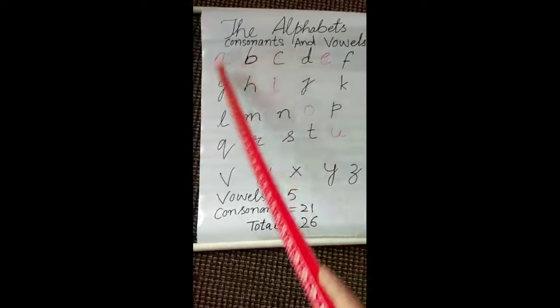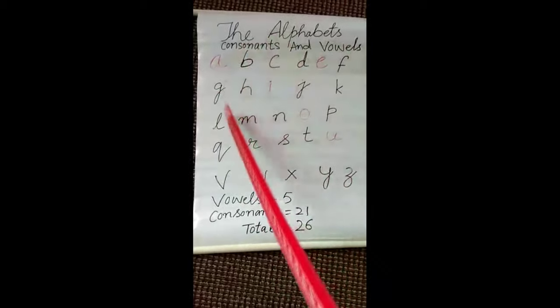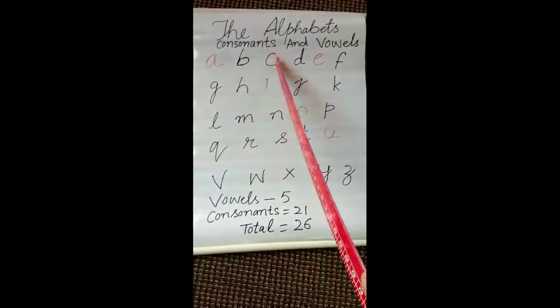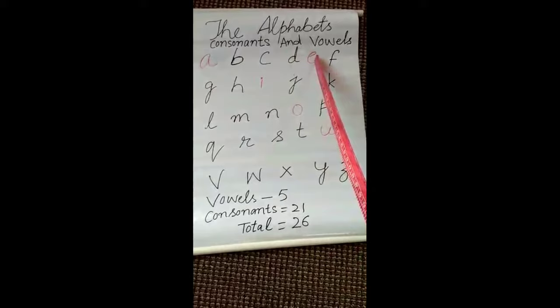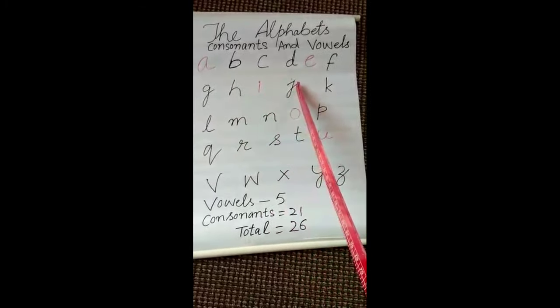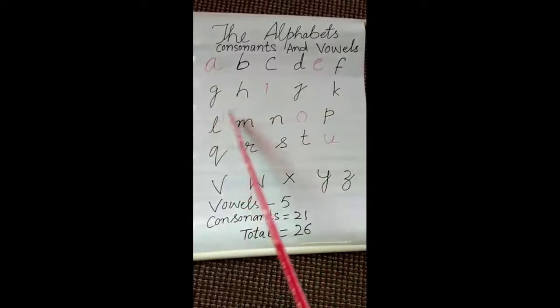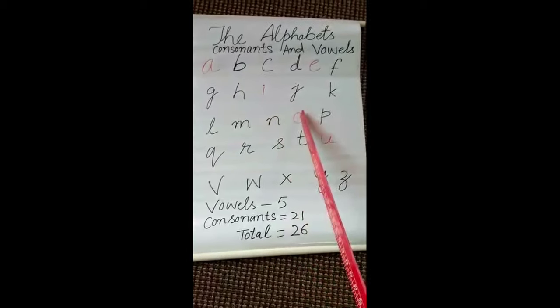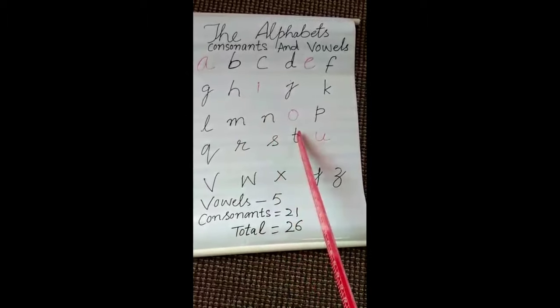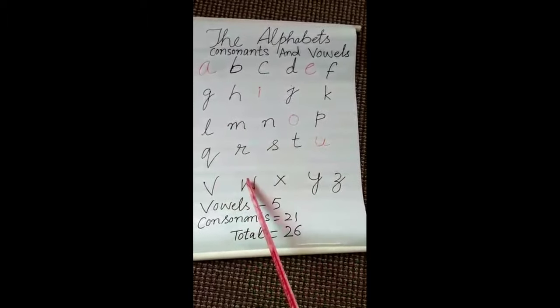Jitne bhi ye letters hai, ye 26 hai. Like you may count: one, two, three, four, five, six, seven, eight, nine, ten, eleven, twelve, thirteen, fourteen, fifteen, sixteen, seventeen, eighteen, nineteen, twenty, twenty-one, twenty-two, twenty-three, twenty-four, twenty-five, twenty-six.